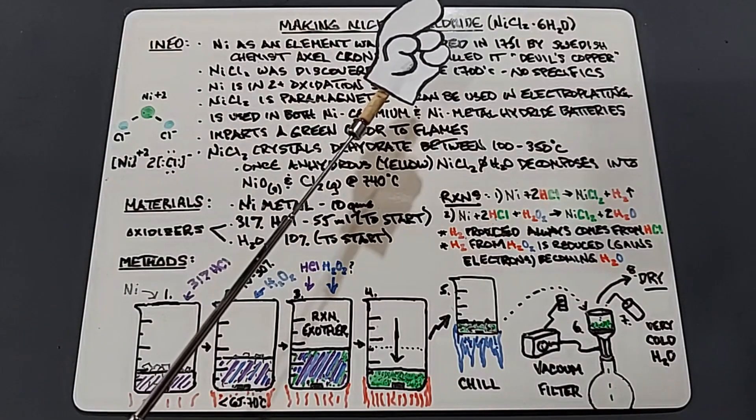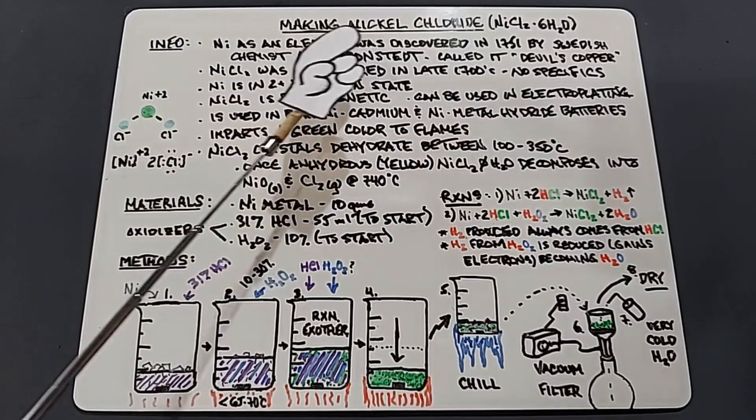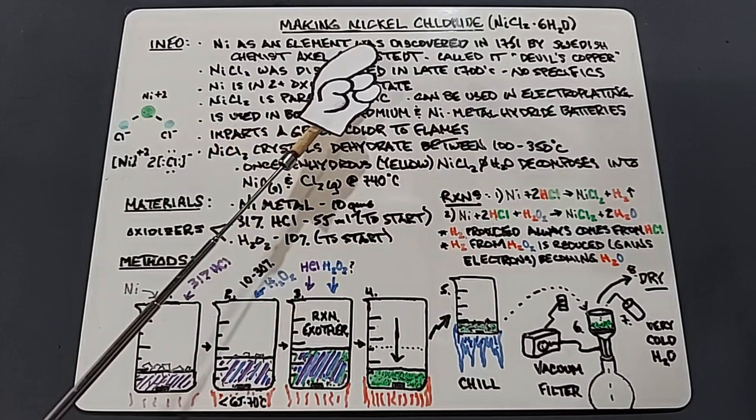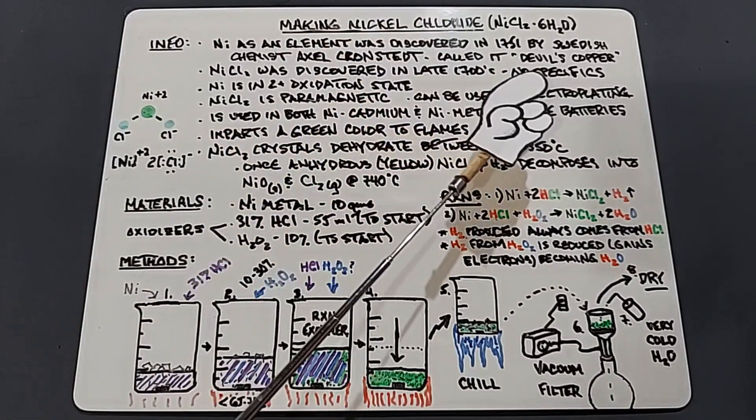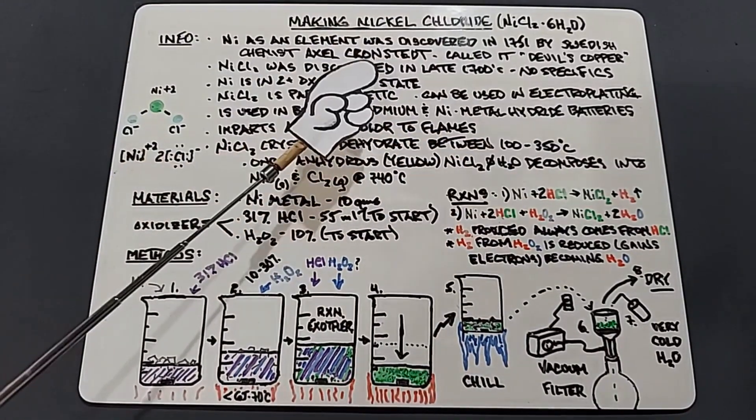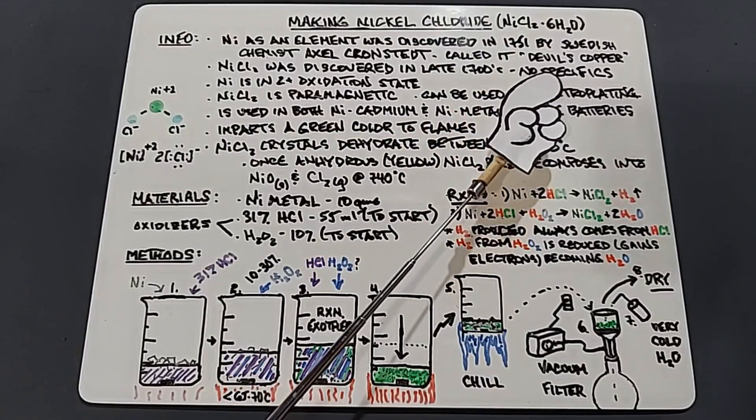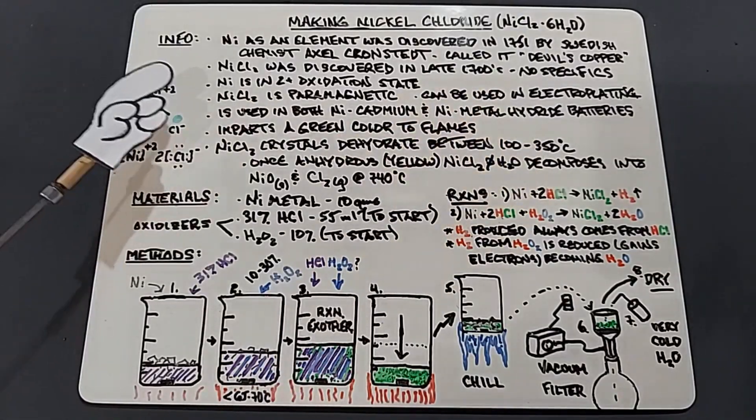So let's go ahead and make some nickel chloride. To start, some information: nickel as an element was discovered in 1751 by Swedish chemist Axel Cronstedt, and he called it devil's copper. Nickel chloride was discovered in the late 1700s, however there were no specifics that I could find as to who made it first.